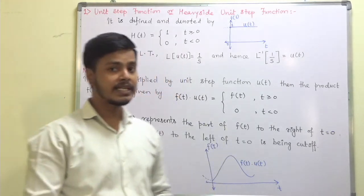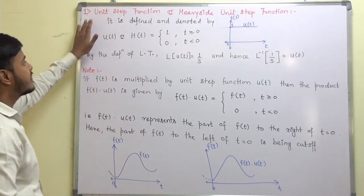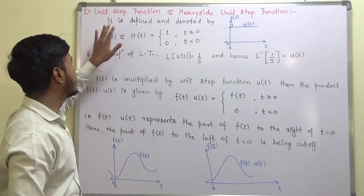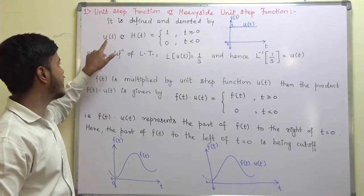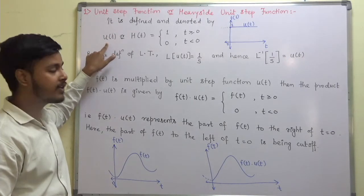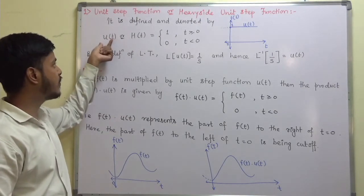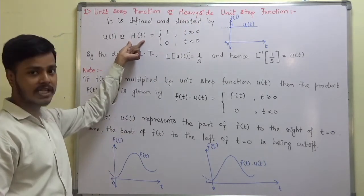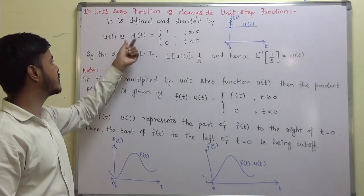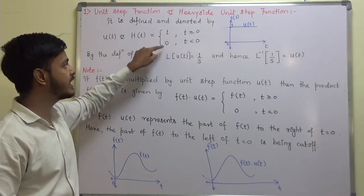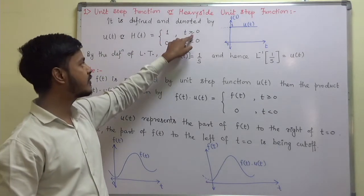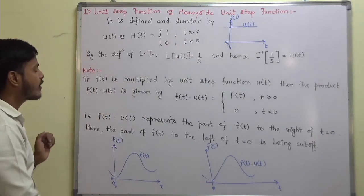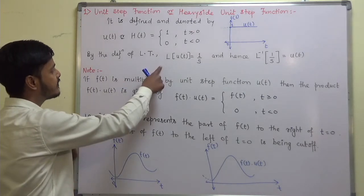The unit step function, or Heaviside unit step function, is defined and denoted by u(t). Whenever we talk about the unit step function we use the notation u(t), and for the Heaviside unit step function we use the notation h(t). This u(t) has values 1 and 0 — it equals 1 for t greater than or equal to 0, and 0 for t less than 0.